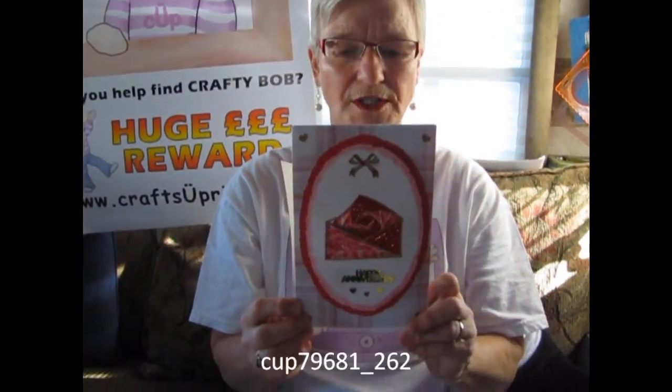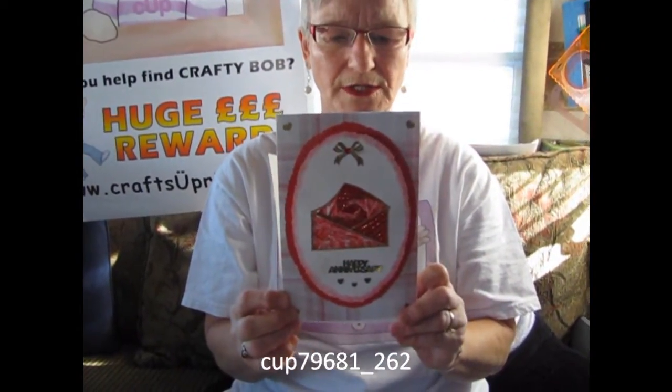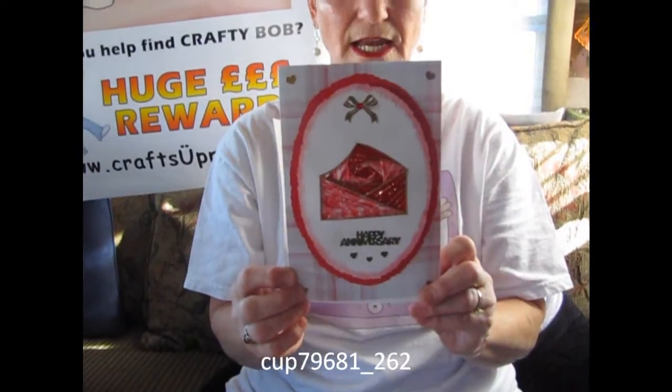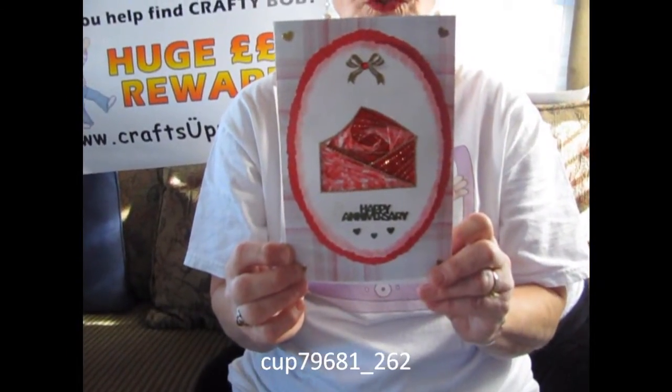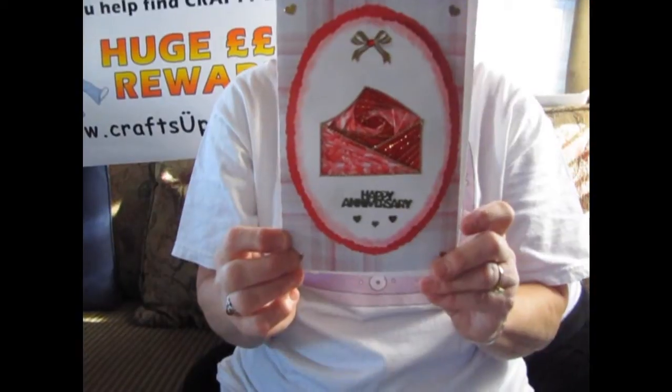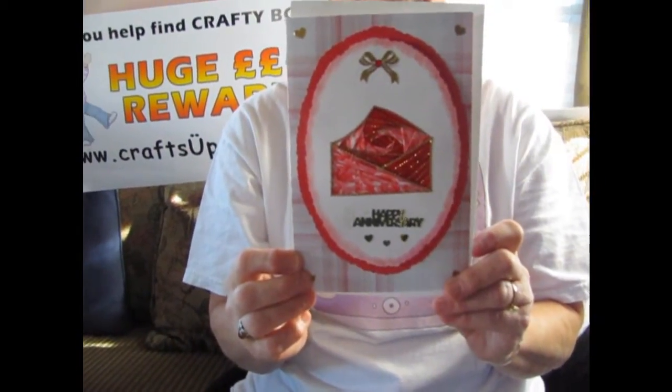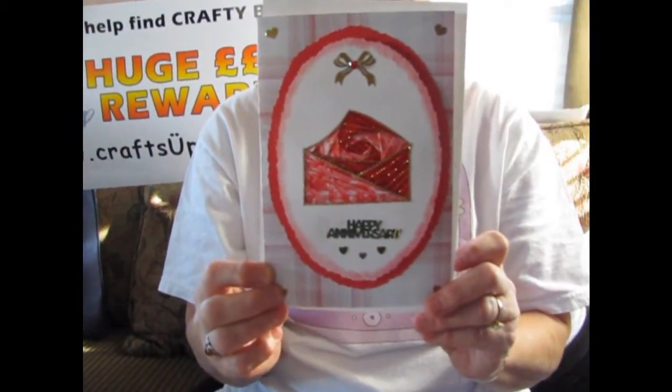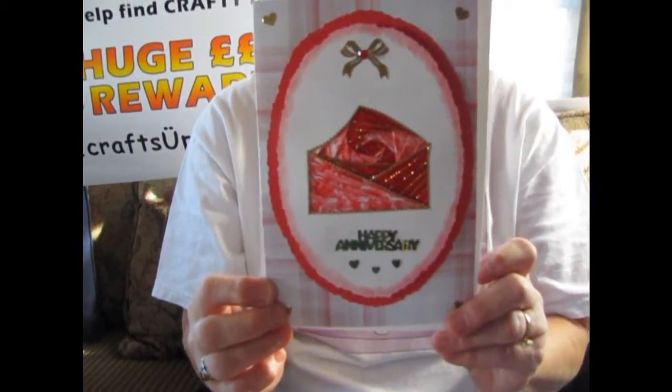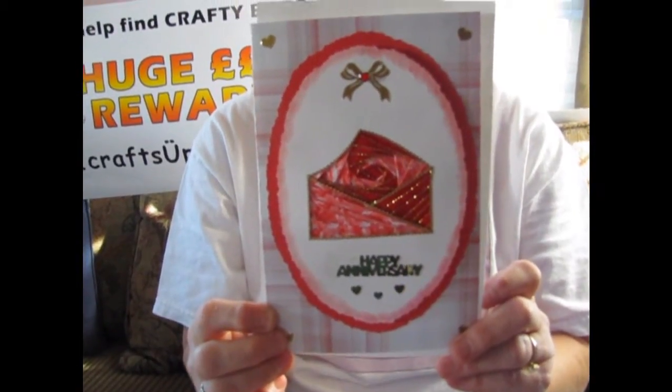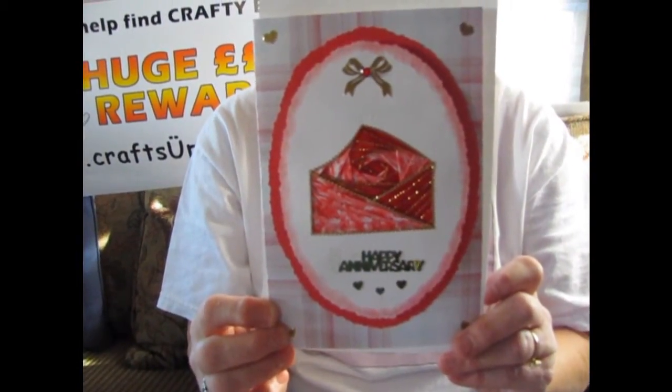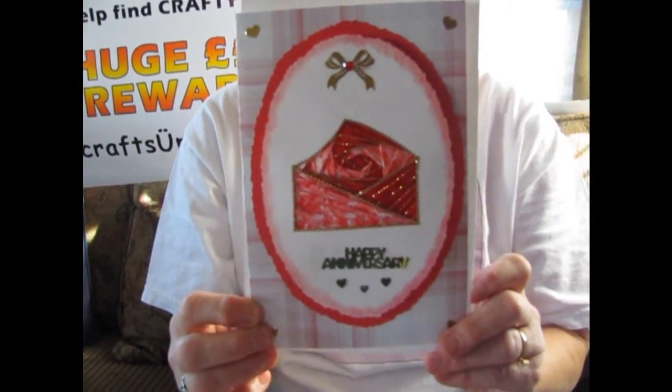So now, today, we're going to make this card. It is cup number 79681 underscore 262. It is an iris folding pattern, but today we are going to use fabric ribbon, not paper ribbon. Okay, let's get started.